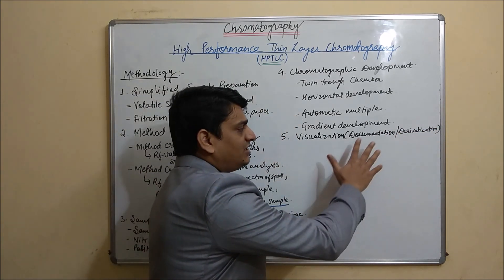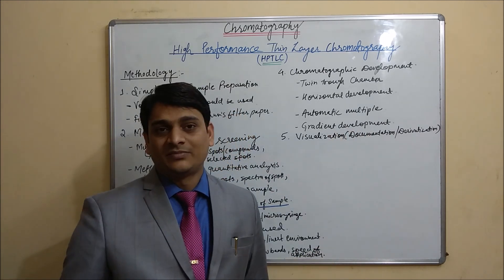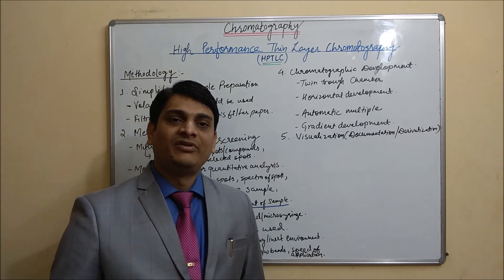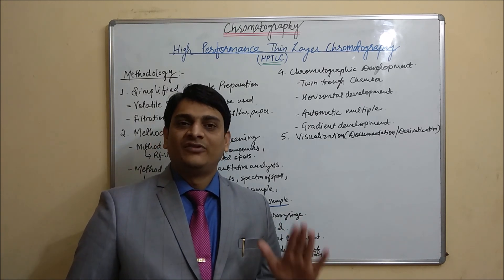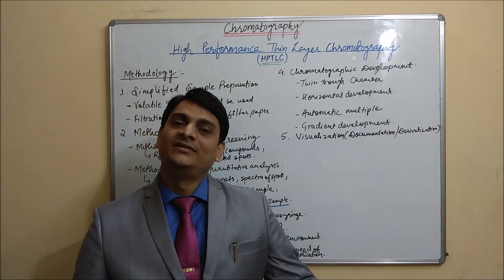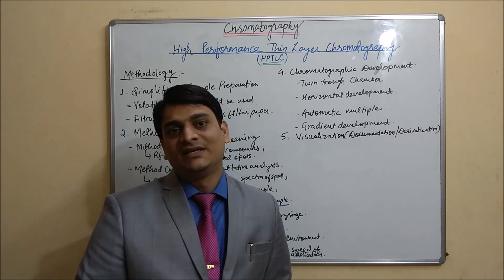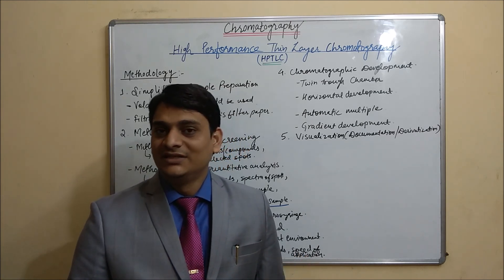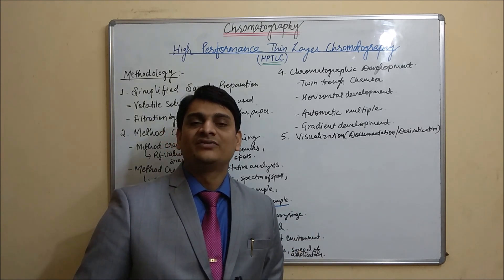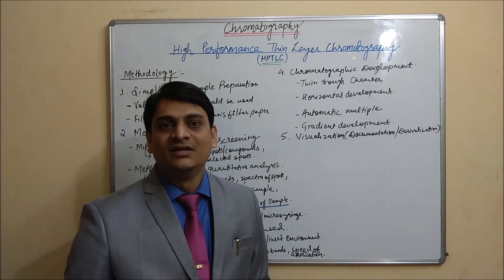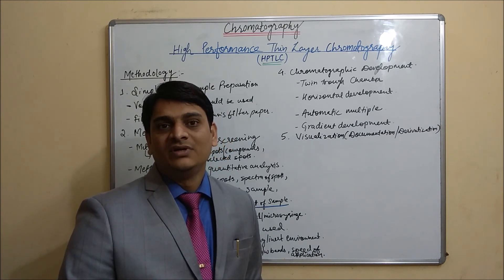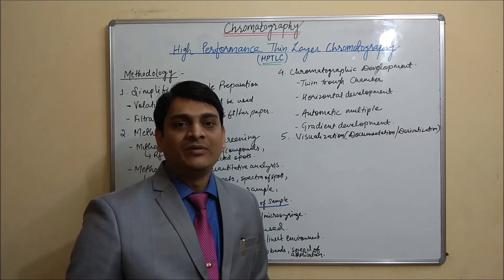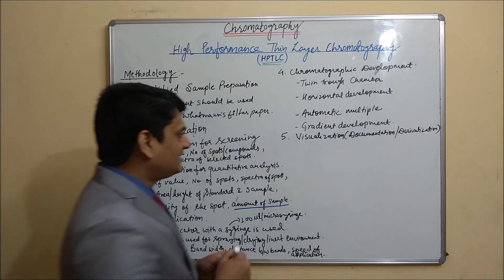The fifth step is visualization, which includes photo documentation and derivatization. For photo documentation, a camera is fitted in the HPTLC chamber where UV light is present, and by using that camera we can take photographs of our HPTLC plate. Derivatization uses various derivatizing or visualizing agents for detection of particular compounds, which was already discussed in episode 5 of TLC.